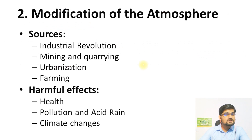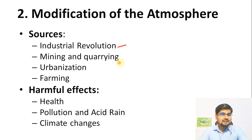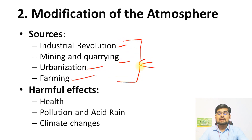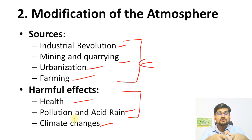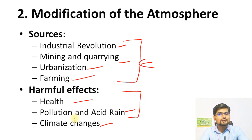Then comes the modification of the atmosphere. Look at the sources: the industrial revolution started it, followed by mining and quarrying activities, urbanization, and farming — all contributing. The harmful effects include health impacts, pollution, acid rain, wind pattern changes, and climate change — very common terms we already know about and have discussed in climatology. This includes what is happening in the ozonosphere — ozone depletion is one of the major aspects of atmospheric modification.